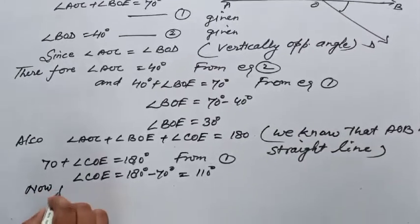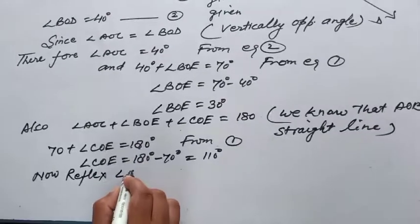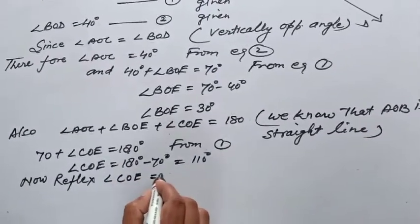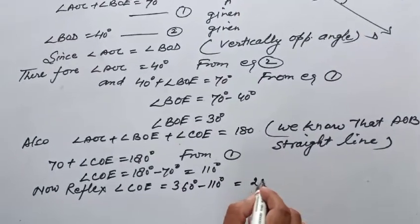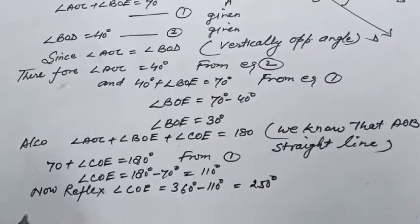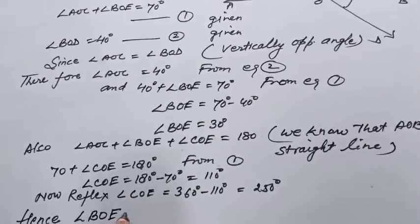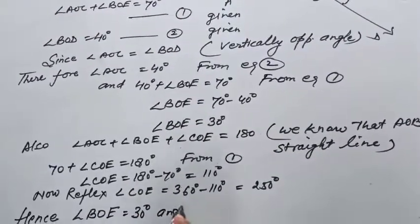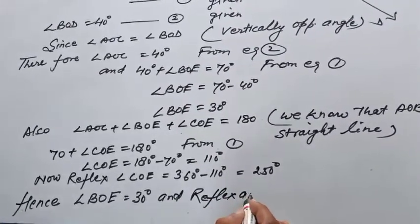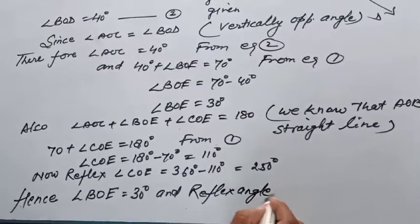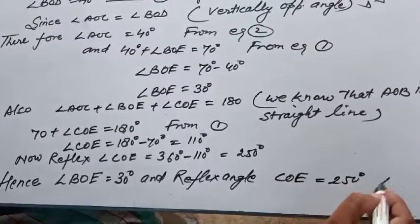Now, reflex angle COE is equal to 360 minus 110 is equal to 250 degrees. Hence, angle BOE is equal to 30 degrees and reflex angle COE is equal to 250 degrees. Answer.